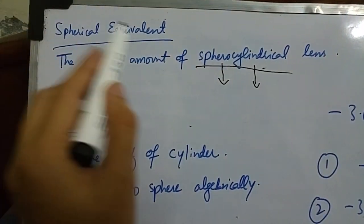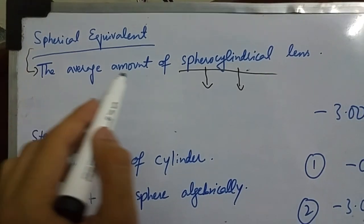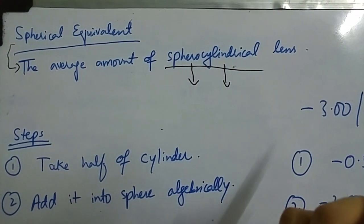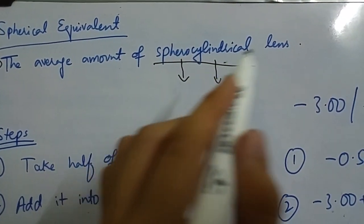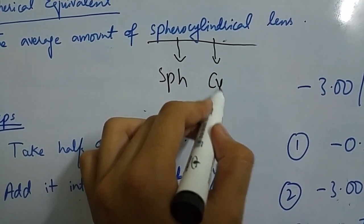Today I will discuss spherical equivalent. Spherical equivalent is defined as the average amount of spherocylindrical lens. Spherocylindrical lens means the lens which has a spherical component as well as cylindrical component.